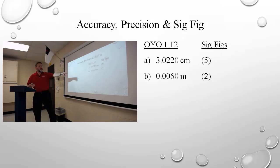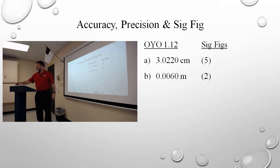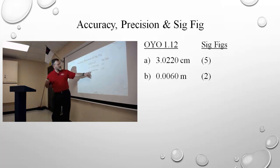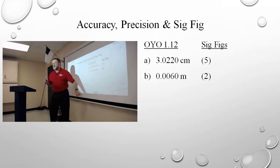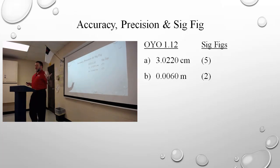How precise is this measurement? To what position of precision? This is the ones place, the tenths, the hundredths, the thousandths, the ten-thousandths. So that measurement is precise to the ten-thousandths place.